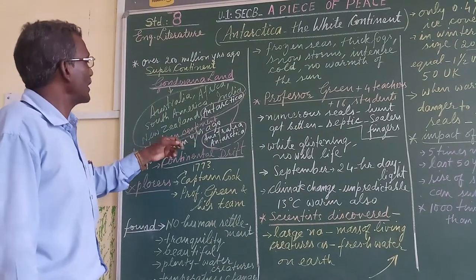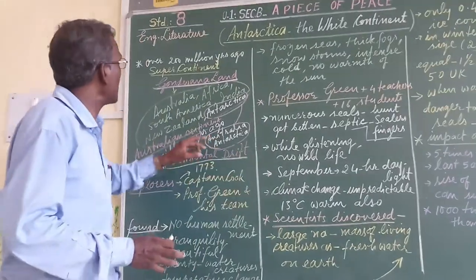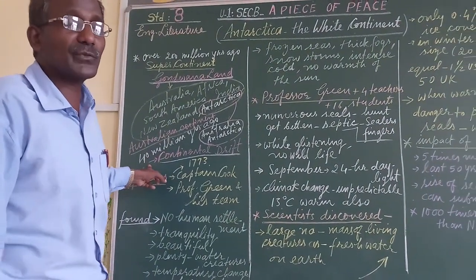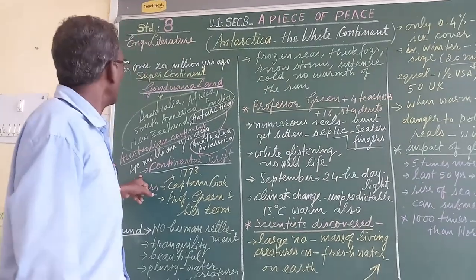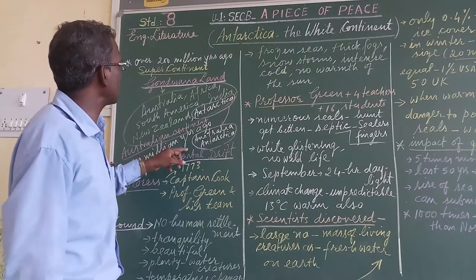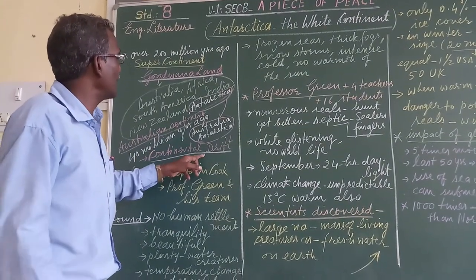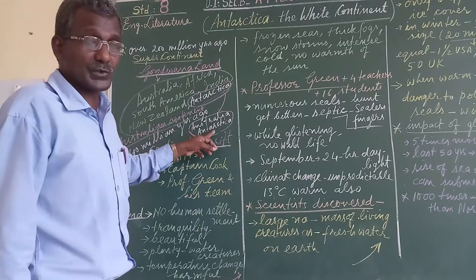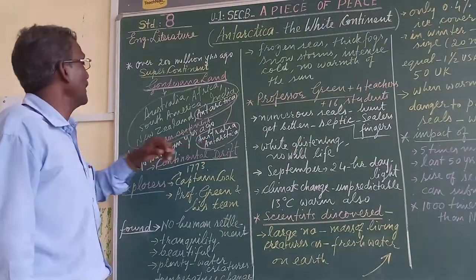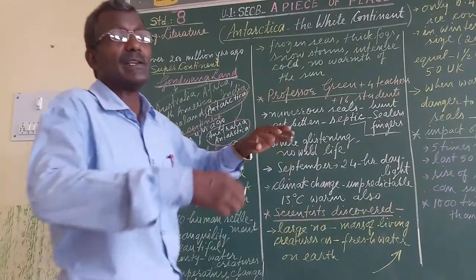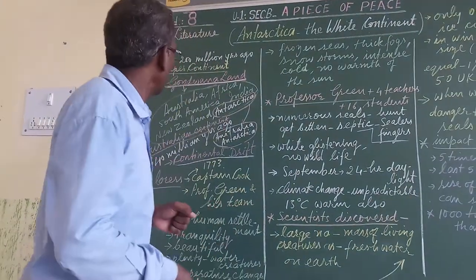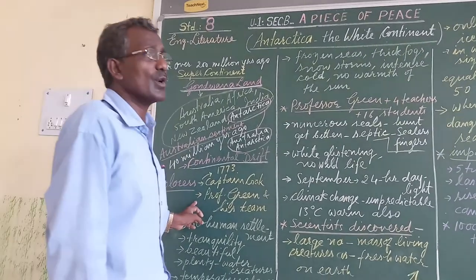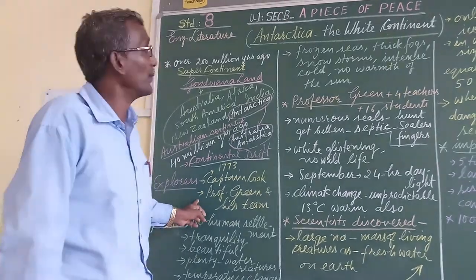Australia and Antarctica once lived together in the Australian continent. About 40 million years ago, this Australian continent also went through Continental Drift and again split into two — giving us what today we have as Australia and Antarctica. Today, we have the Antarctica continent remaining in the southernmost part of the Earth. Let us continue understanding and finding out what we know about the continent of Antarctica.